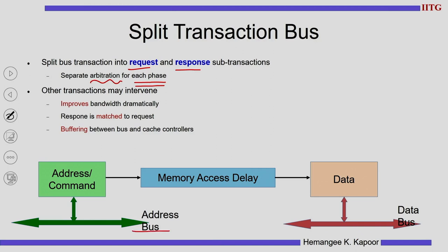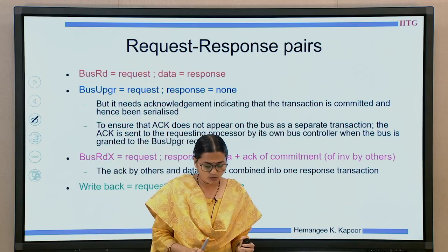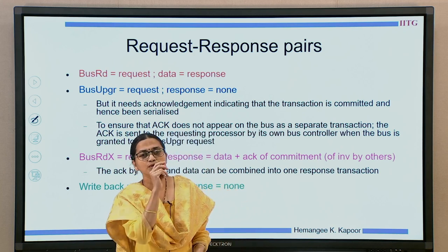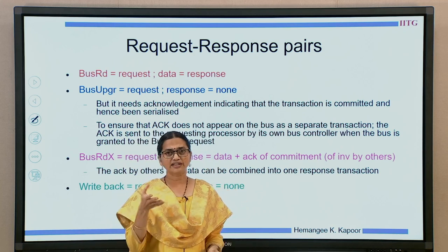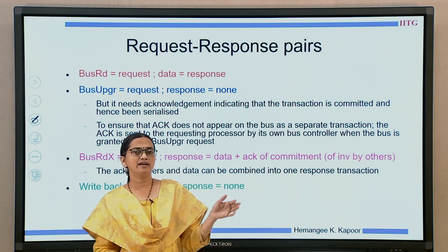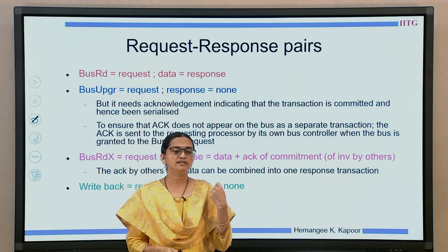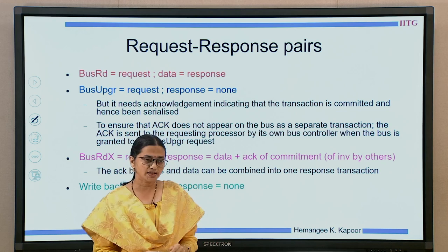So I have a separate address bus and a separate data bus. Both buses are now treated differently. Initially we had all these wires as separate wires but bundled together calling it one bus; now we divide it into two buses — address and data. We now go back to our original set of transactions and understand how to split them and what the requests and responses are for each of them.